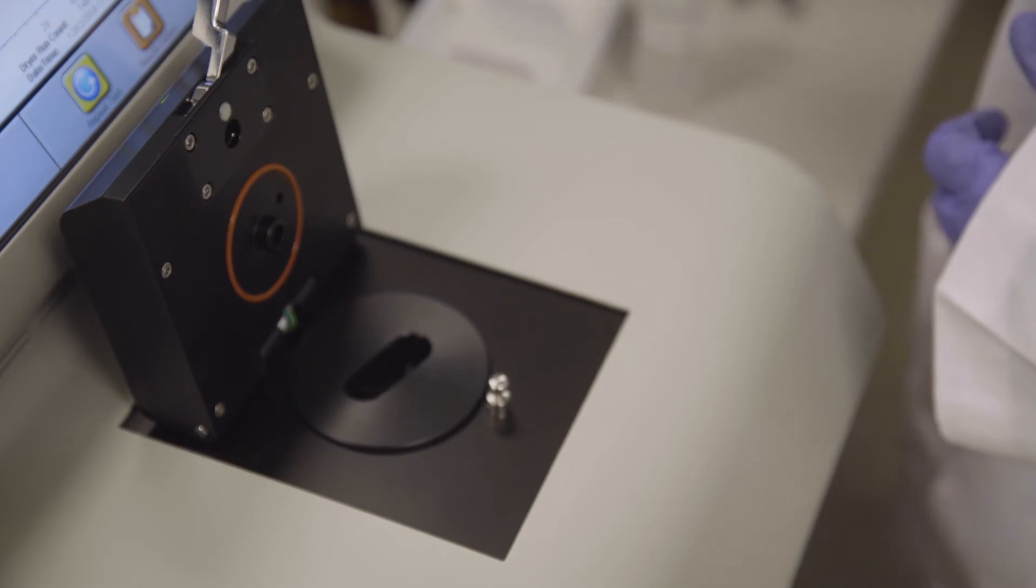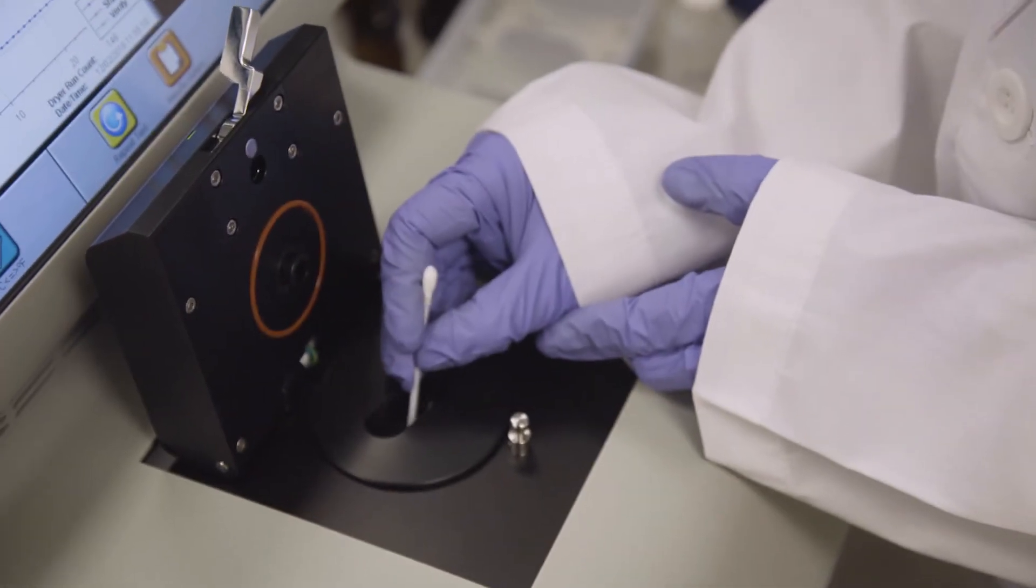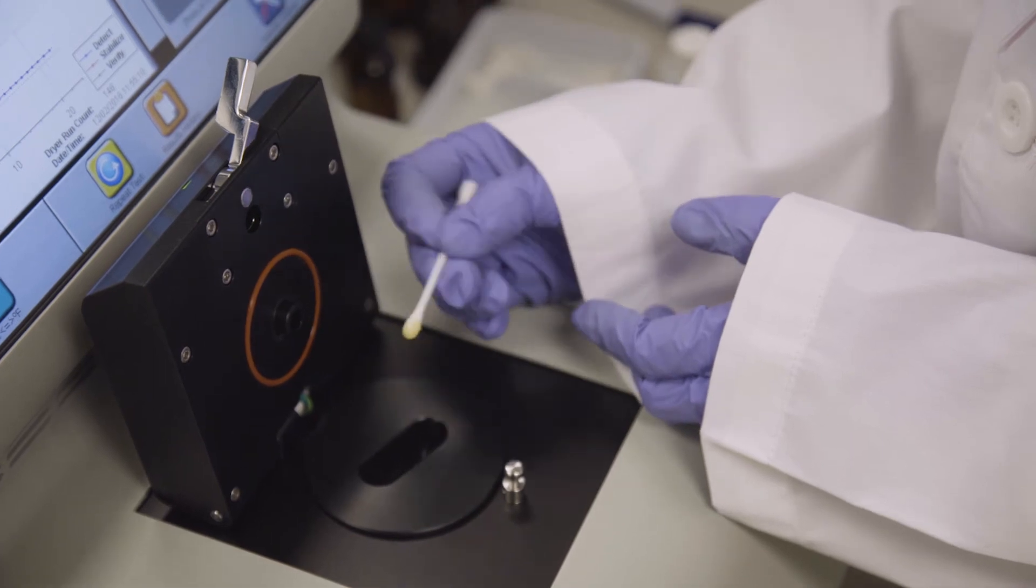To remove viscous samples such as base oils or lubricants, first remove the sample and dry the sample cup with a clean cotton swab.